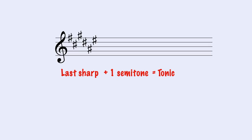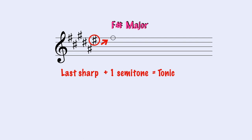Let's make another example. If we have six sharps, the last one in our key signature is Mi sharp. Plus one semitone equals Fa sharp. The key chord is F sharp major. That's all.